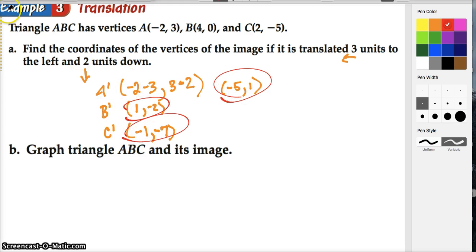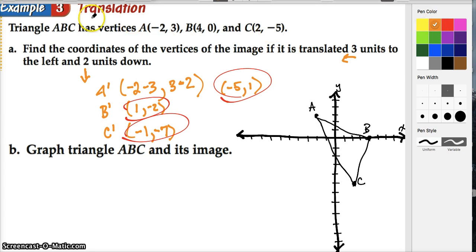Finally, we're asked to graph ABC and its image. So here is our preimage, triangle ABC, and here's the image A prime, B prime, and C prime. Let's see what we got.